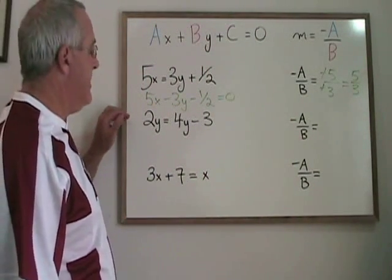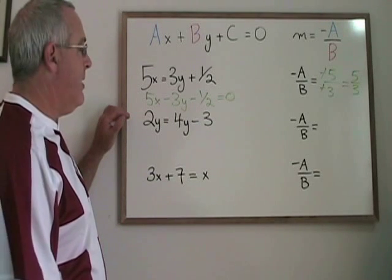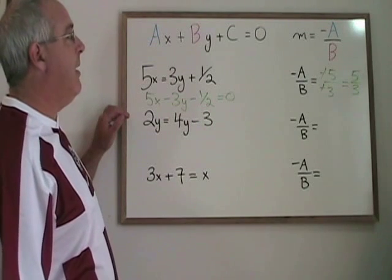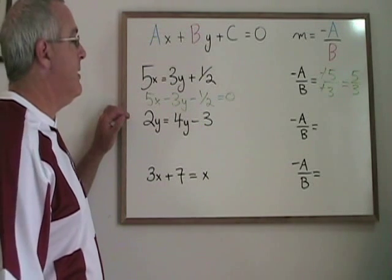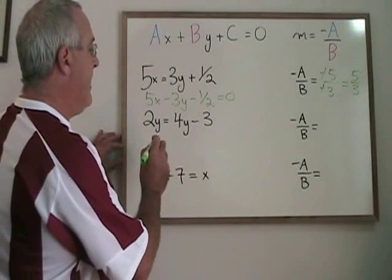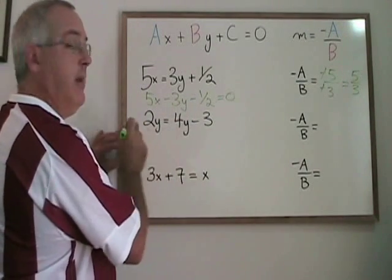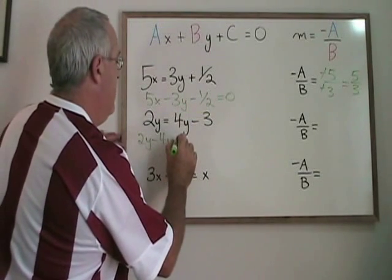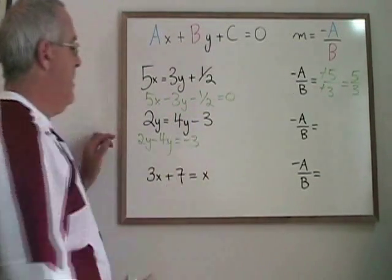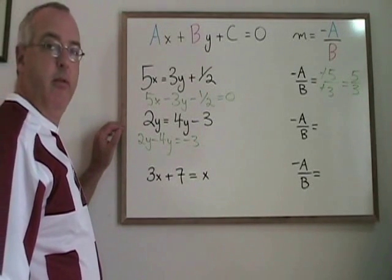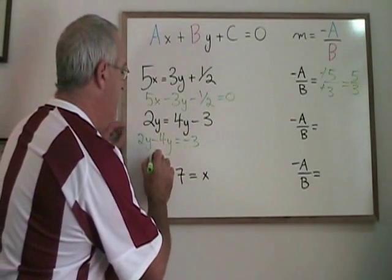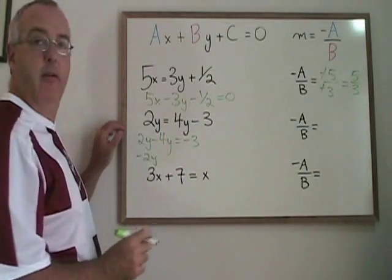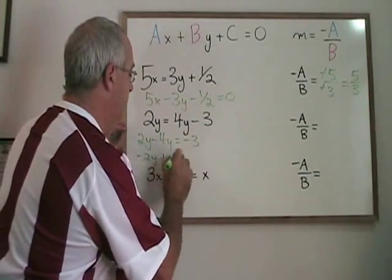This next example is a horizontal line. It has y's in the equation but no x's. We can still use the ax plus by plus c equals zero form to express the equation of this line. If I move the 4y to the left of the equals, I get 2y minus 4y equals negative 3. 2y minus 4y is equal to negative 2y. And if I move the negative 3 to the left of the equals, I have plus 3 equals zero.